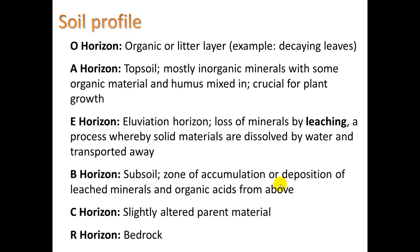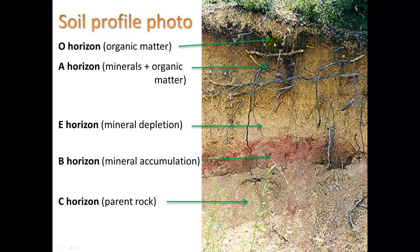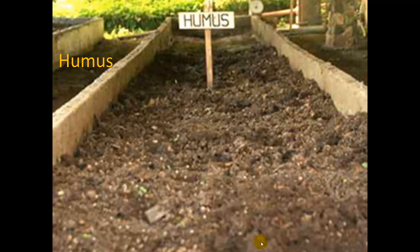Let's look at some real pictures. Here we have the O horizon — organic matter, with debris like leaves, twigs, and roots. Underneath that is the A horizon, including minerals and organic matter — our topsoil. Then we have the E horizon showing mineral depletion; notice how it's lighter colored. But then underneath we have a darker color — that's our mineral accumulation from what was leached down from the E horizon. Then the C horizon, our parent rock, and further underneath, our bedrock — the R layer.